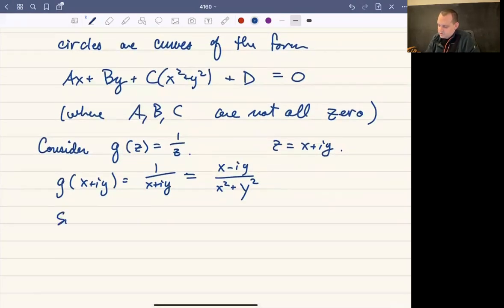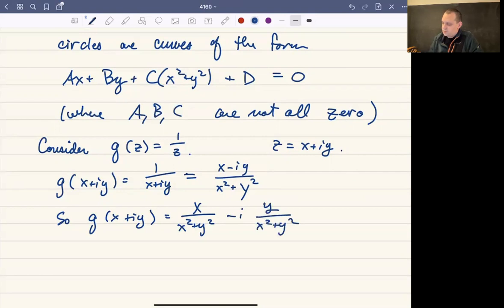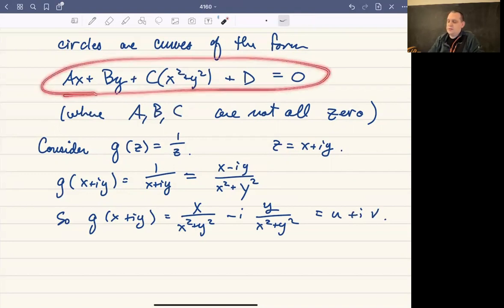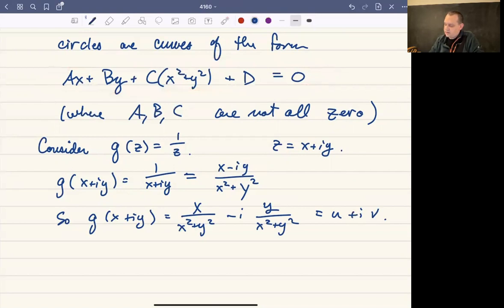So what we can do is think of G as having a U and V. Let's write it this way first. This is going to be x/(x² + y²) minus i·y/(x² + y²). So this is going to be our U + iV. And notice that x and y satisfy that equation. What we can do is check that if we were to have Au - Bv - D(u² + v²) + C, let's just think about what that's going to be equal to.